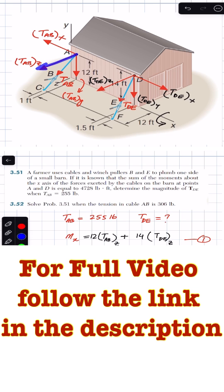Now this TAB z component is producing the moment about the x-axis in this direction. The perpendicular distance of this component from the x-axis is this distance, which will be the moment arm: 12 times TAB_z. And for this one, the moment arm is 14 feet, so 14 multiplied by TDE_z.